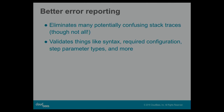These compilation errors tell you what went wrong and give you suggestions for what you might have meant if you had a typo in a parameter name. Through this, we eliminate many potentially confusing stack traces that pipeline can give you when things go wrong — not all of them, but many of the most commonly encountered and mystifying ones. Instead, you get a clear error message about what's wrong in your pipeline definition rather than waiting until the end of the build. We validate syntax, required configuration, step parameter types, and more.